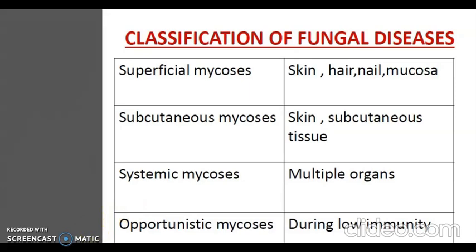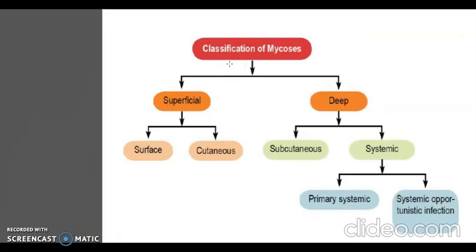Opportunistic mycoses occur in patients with reduced immunity, such as those with cancer, diabetes, or those on immunosuppressive drugs. These infections are caused mainly by fungi that are normally avirulent, such as Mucor, Penicillium, and Aspergillus. Mycoses can be broadly classified into superficial and deep-seated types. Superficial includes surface and cutaneous infections; deep-seated includes subcutaneous and systemic infections. Systemic infections are further classified into primary systemic and systemic opportunistic infections.